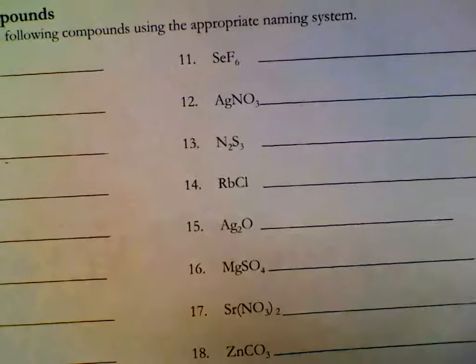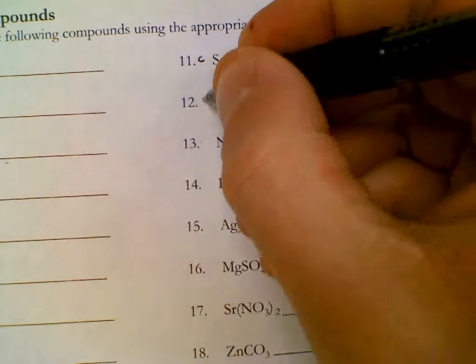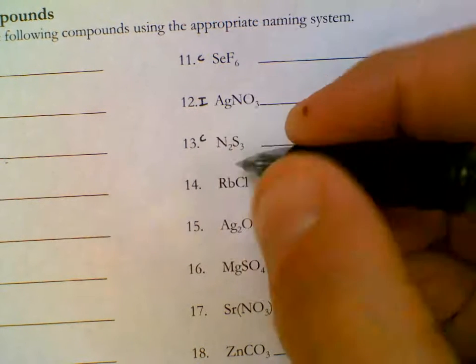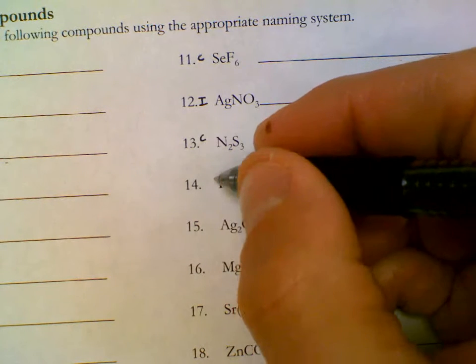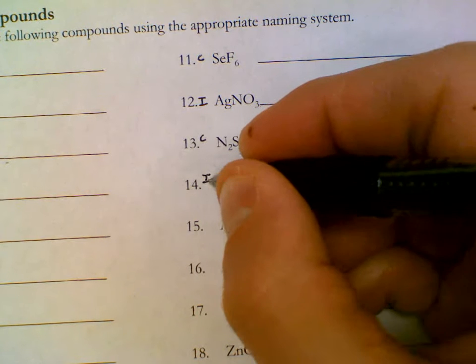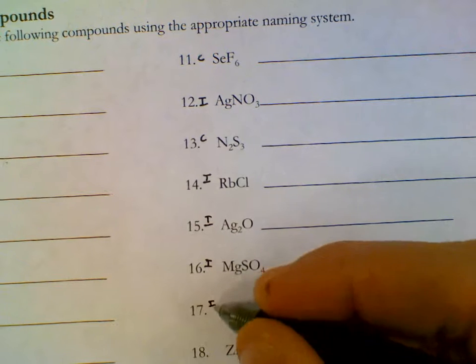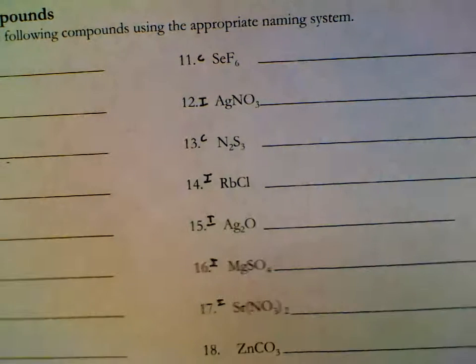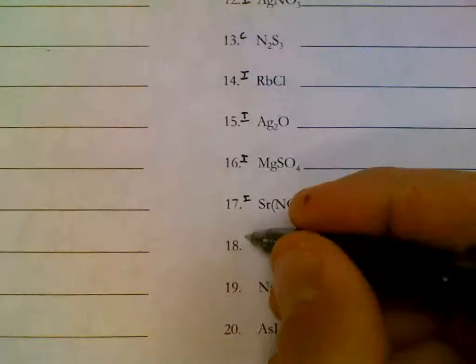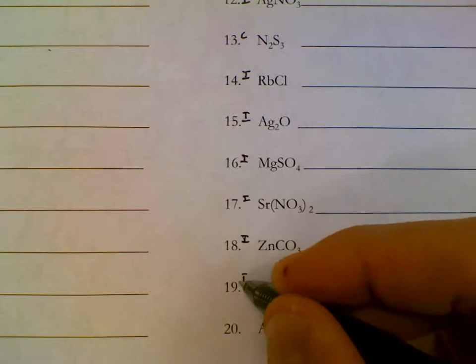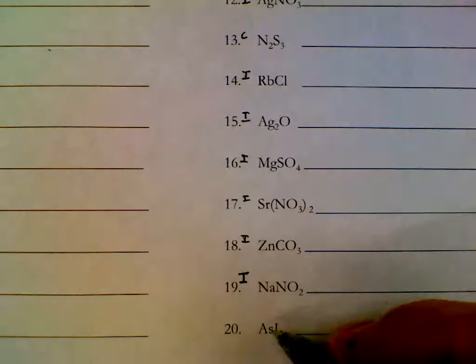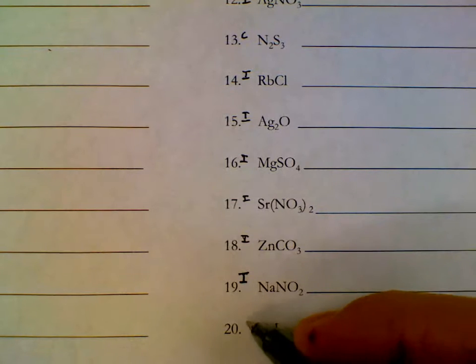On the right hand side, 11 is covalent, 12 is ionic, 13 is covalent, 14, rubidium is on the left side, that's ionic. Ionic, magnesium ionic, strontium metal ionic, 18 three atoms ionic, 19 three atoms ionic, and then 20 arsenic is on the right hand side, that's covalent.